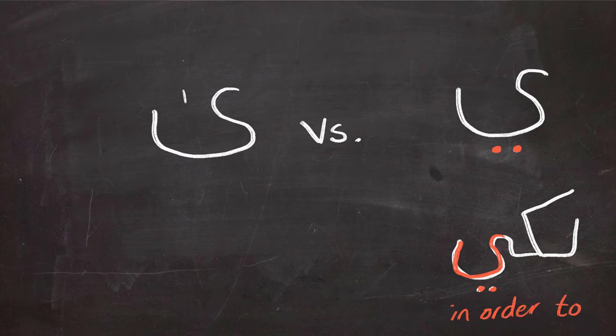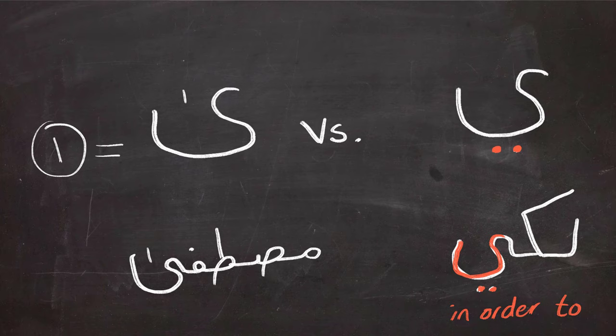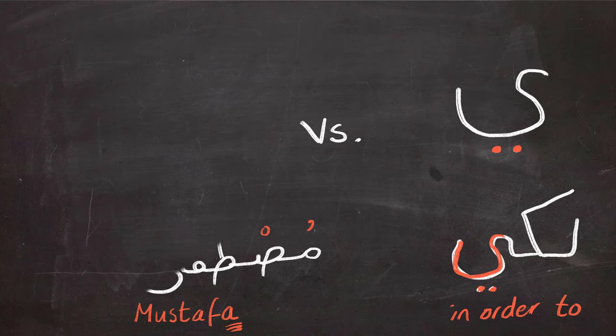On the left side, ya maqsura is pronounced like an alif, like in the word Mustafa. So we don't say Mustafi, we say Mustafa. So ya maqsura has this little symbol on top of it and it is pronounced just like the alif.